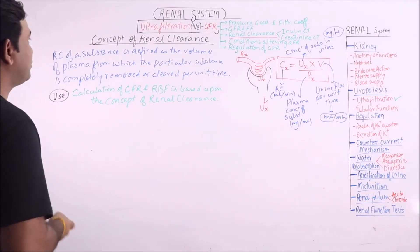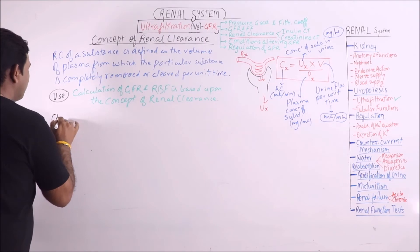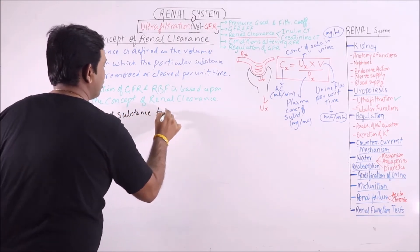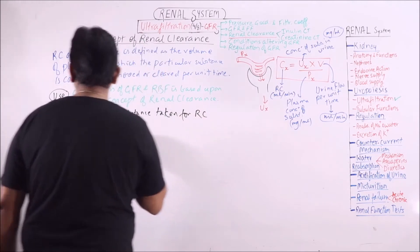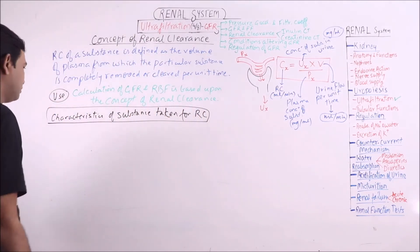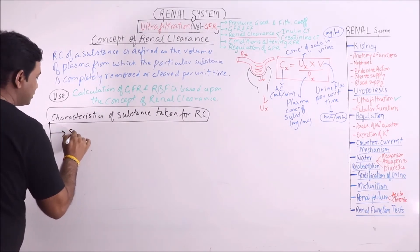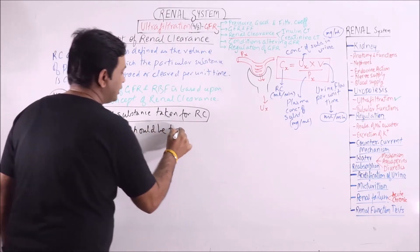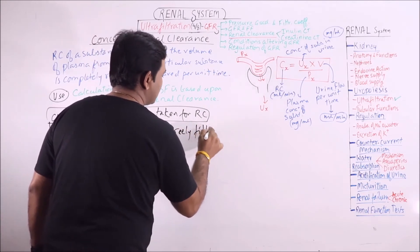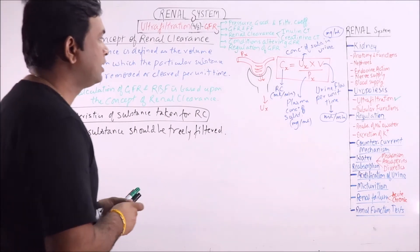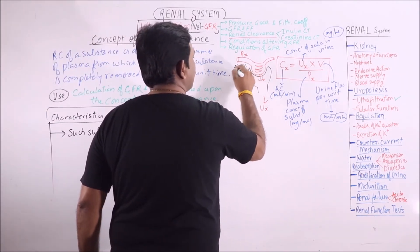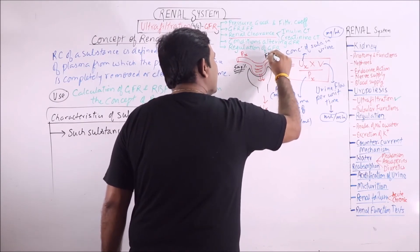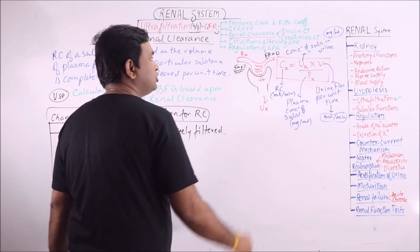Then, which substance should be taken for renal clearance? What are the characteristics of substance taken for renal clearance? First is that such substance should be freely filtered. Now, what do you mean by freely filtered? That if afferent arteriole is having the concentration of that particular substance, 5 mg per cent, then the efferent arteriole should be having 0% concentration.